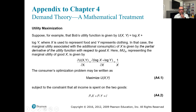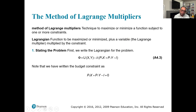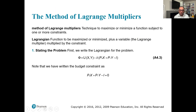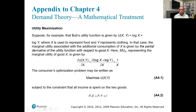What we are doing here: we suppose, for example, that Bob's utility function is given by U(x, y) = log x + log y. This is a utility function and it can be in any form — here we are using a log form. Where x represents food and y represents clothing. The marginal utility associated with additional consumption of x is given by the partial derivative of the utility function.